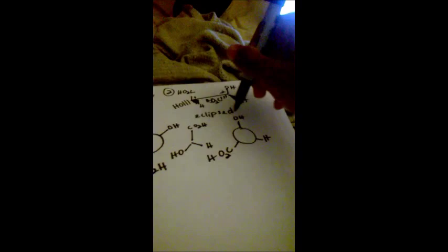Carbon two — the farthest away — has the hydroxyl group straight up, hydrogen on the right, and the carboxylic acid group on the left. When you put these together, you get a staggered conformation with a lot of interactions between the substituents because you have a lot of bulky groups.